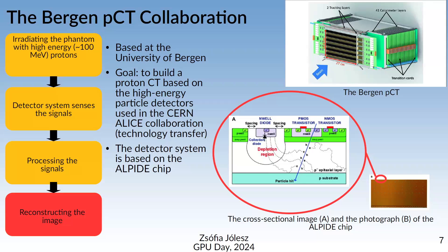How does this workflow look? First, we irradiate the patient — or in our case, phantoms — with high-energy protons, around 100 MeV, not the energies used in CERN experiments. Next, the detector system senses the signals and we process them — my colleague Ben Sedudash will explain this further. The last step is image reconstruction, which is where I come into the picture.